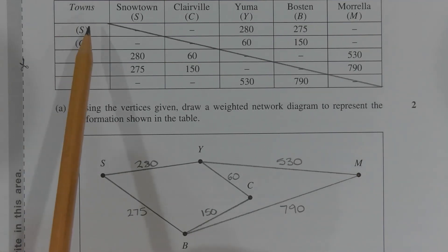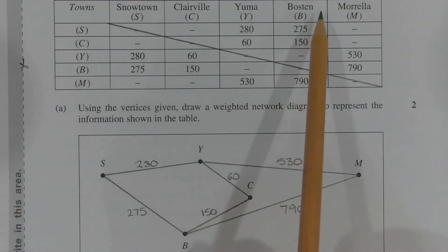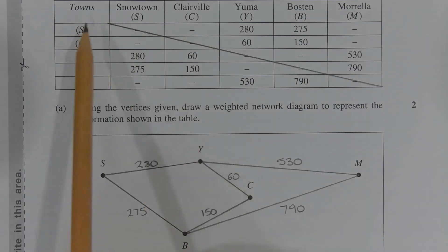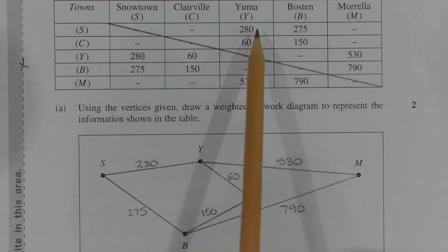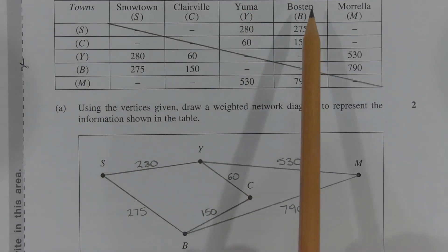Looking at the first row, town S is connected to towns Y and B. The distance between town S and town Y is 280 kilometers. The distance between town S and town B is 275 kilometers. This is indicated on the network diagram here and here. So we draw an edge between vertex S and vertex Y and write 280 next to that edge, which indicates the distance between towns S and Y. And drawing an edge between vertex S and vertex B and writing 275 next to that edge, which indicates the distance between town S and town B.